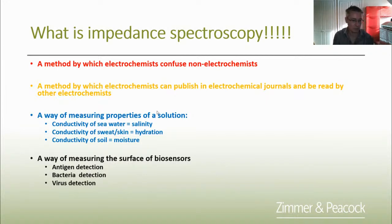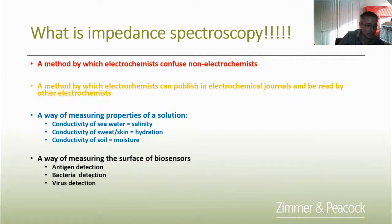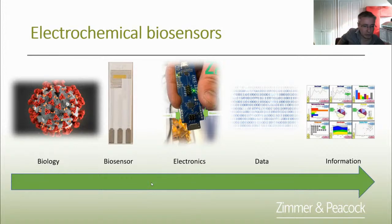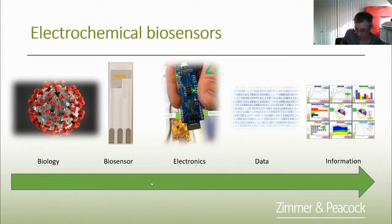Impedance spectroscopy is a way of measuring conductivity — you can use it to measure the conductivity of seawater, salinity, the conductivity of skin, and the conductivity of soil. It's also a way of measuring the surfaces of biosensors, be it antigen detection, bacteria detection, or virus detection. Electrochemical biosensors are super useful because they're a really good way of translating biology into information — we can have something like a COVID-19 viral particle and through a screen-printed electrode convert that into a biosensor.